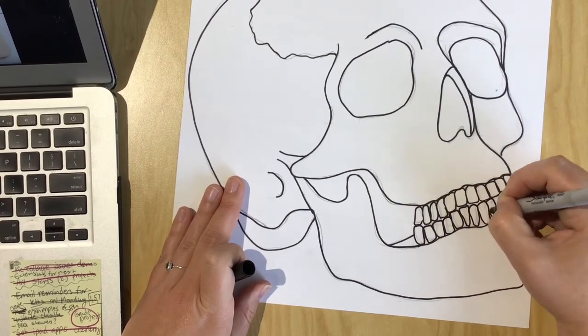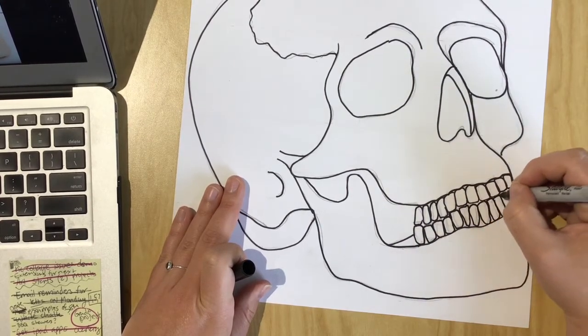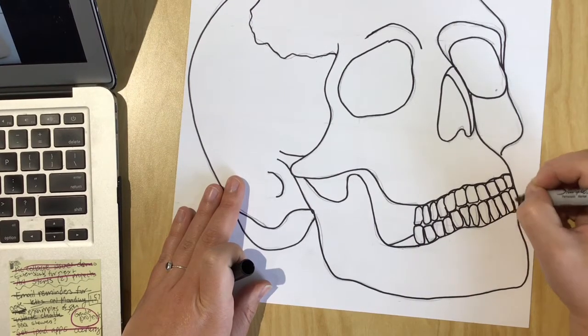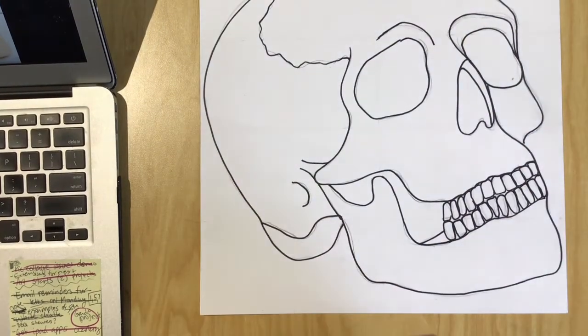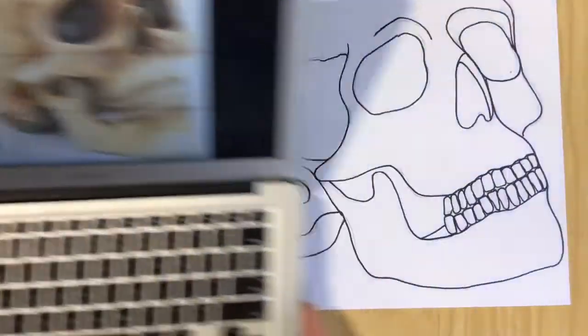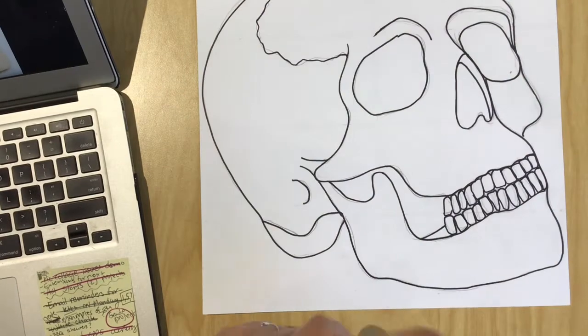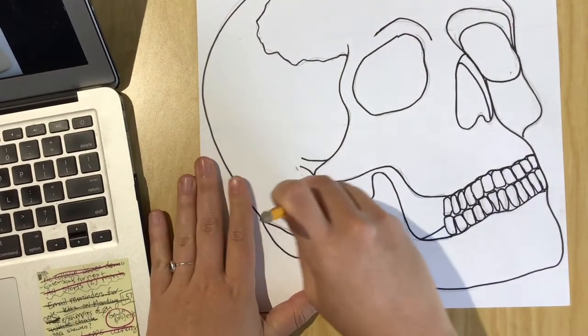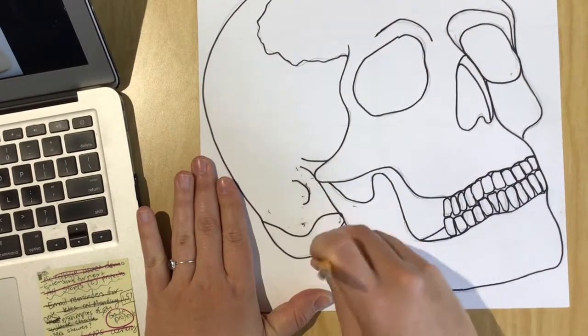So if I tried to draw this skull without a grid, I would have a lot of sketching and a lot of mistakes and a lot of adjusting but because I had the grid, it helped me get that awkward angle that this is at. So now I'm going to take my eraser and erase on top of all my lines just to clean it up.